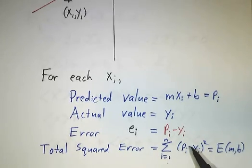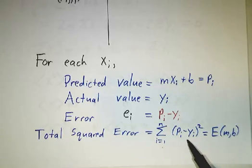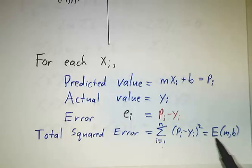And what we care about is we're going to add up the squares of all the errors, add them up for all n points, and this is our function e, which depends on m and b.